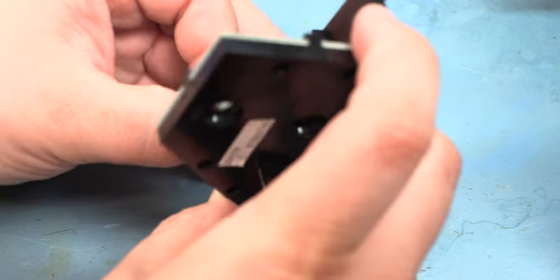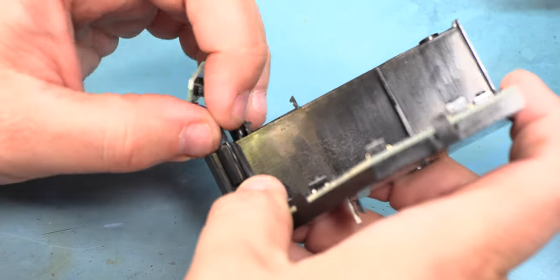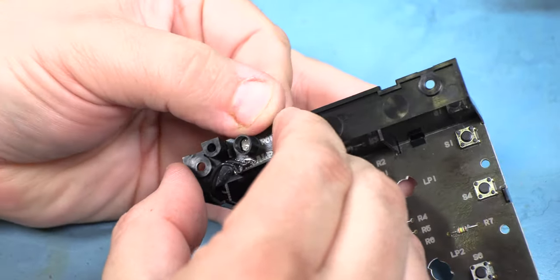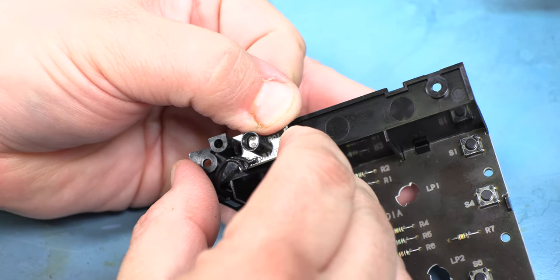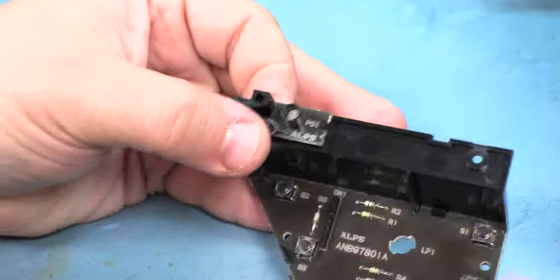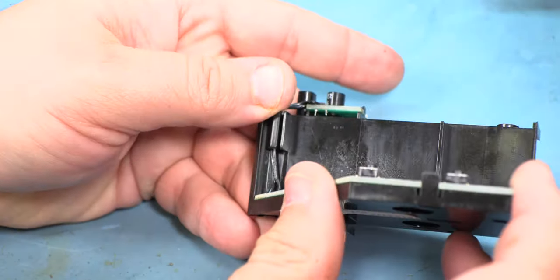Next, we'll manipulate that wire back into the channel. We'll hook the left edge of the photocell circuit board. And then we'll press the right edge into place. We'll make sure that that's secure and that the wire is still in the channel, and it is.